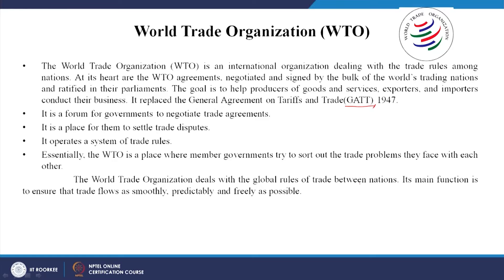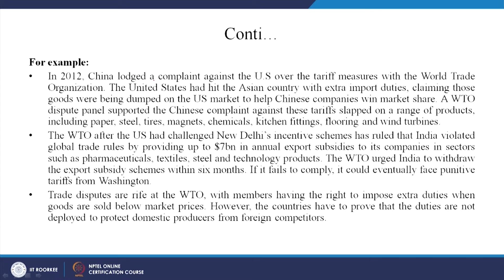The World Trade Organization deals with the global rules of trade between nations. Its main function is to ensure that trade flows smoothly, predictably and as freely as possible. For example, in 2012 China launched a complaint against the US over tariff measures. The United States had hit China with extra import duties, claiming those goods were being dumped on the US market to help Chinese companies win market share. The US government raised import duties to make Chinese goods more costly so they would not be able to gain ground in the US market.